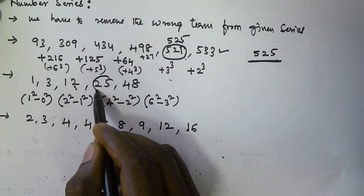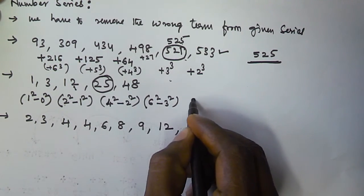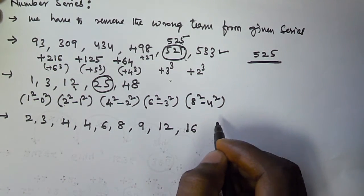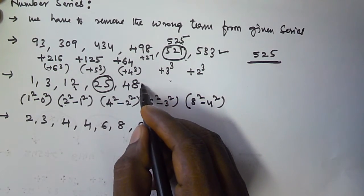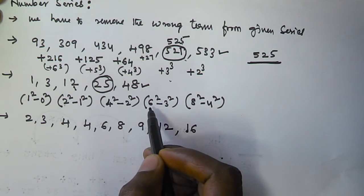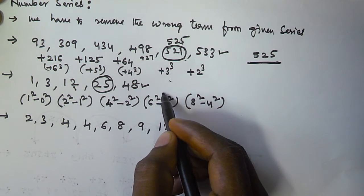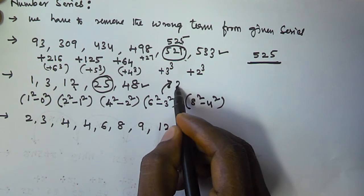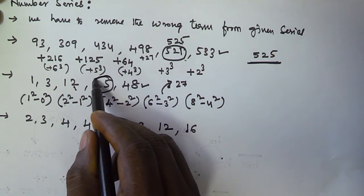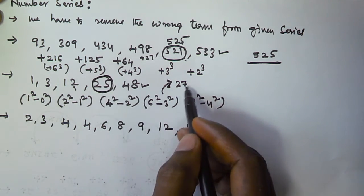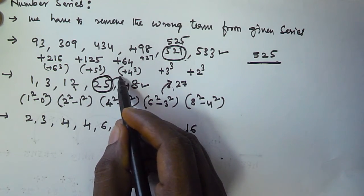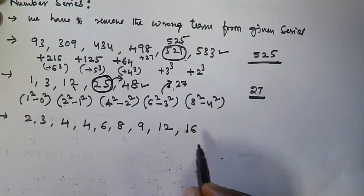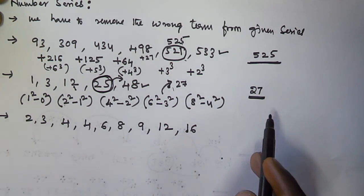So 6² minus 3² equals 36 minus 9 equals 27, but the given value is 25. Then 8² minus 4² equals 64 minus 16 equals 48, which matches. So the wrong number is 25 — the right term is 27. We have to remove 25 and replace it with 27.